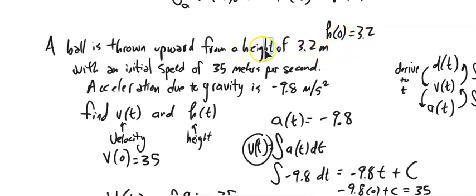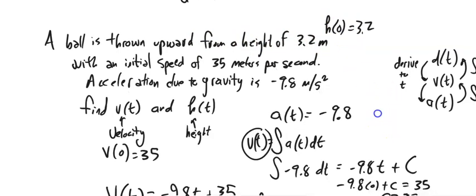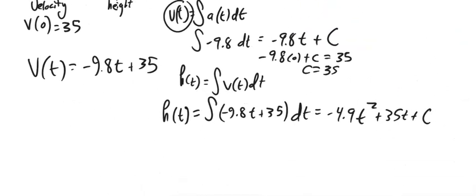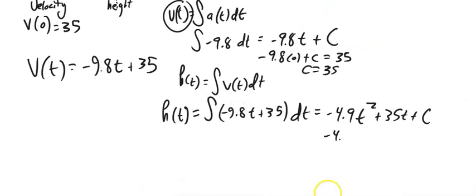This could be different information. It could tell me 3 seconds in, it's at a height of whatever, and then this would be a 3. But in this case, it's 0. So that means that negative 4.9 times 0 plus 35 times 0 plus c equals that initial height of 3.2.